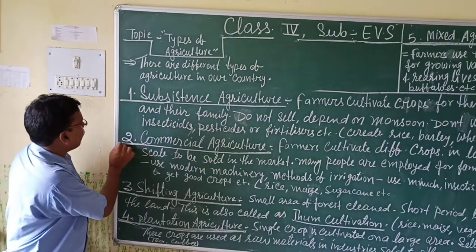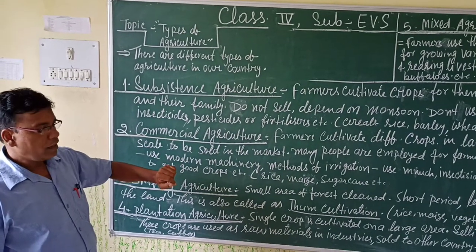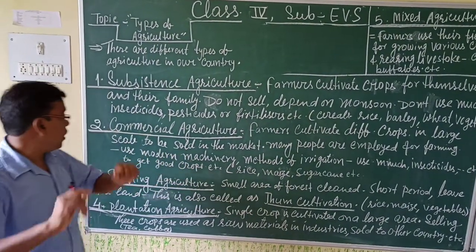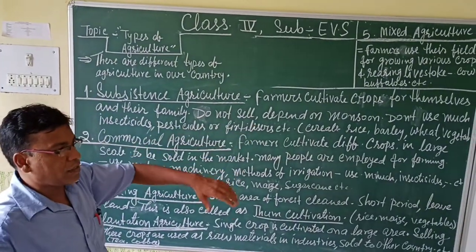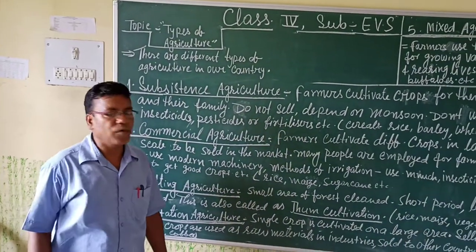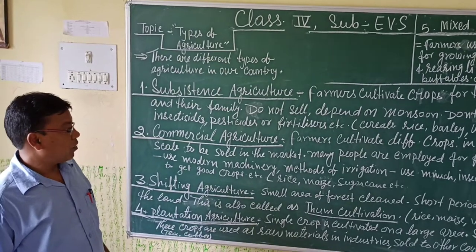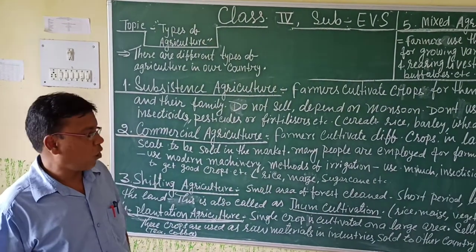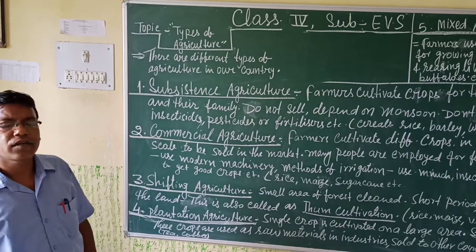Now we shall move to the second point, that is commercial agriculture. In this type of agriculture, farmers cultivate different crops on a large scale to be sold in the market. Many people are employed for farming, and they use modern machinery, modern methods, and modern methods of irrigation so that they may produce more crops.